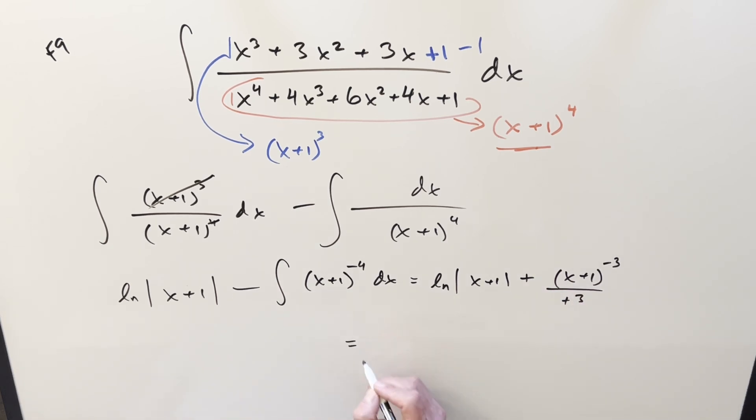And so let me just clean it up. For the final solution on this, we get natural log absolute value x+1 plus 1 over 3(x+1)³, add a plus C, and that's it. Quick one from Caltech Math Meet 2025. Thanks everyone for watching. Have a good day.